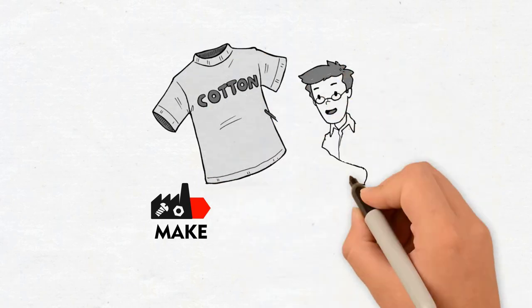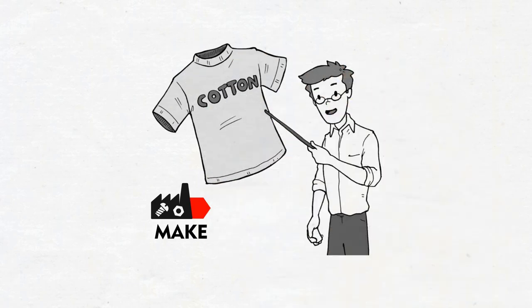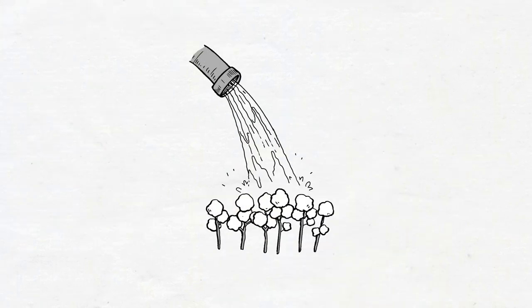Make. Let's use a simple cotton t-shirt as an example of how polluting is the process of making garments. At the farm, a huge amount of water is required to make the cotton grow.